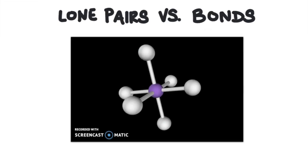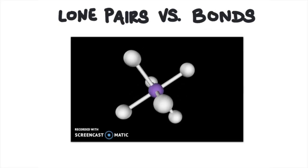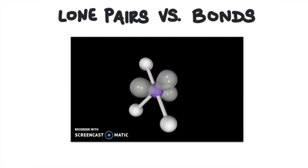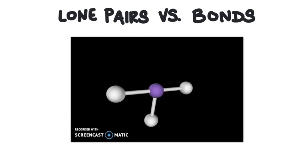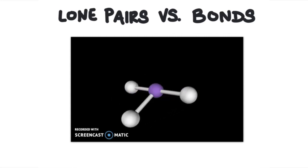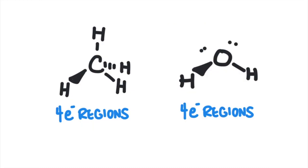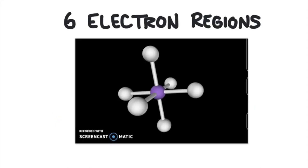Now we can have six electron regions, but they don't all have to be bonds — some of those regions could be lone pairs. Remember that we only see bonds and won't see the lone pair, so the molecule is going to look really different if we replace a bond with a lone pair. Take a look at these two for example: the same number of electron regions, but the molecules look really different. So let's look at the different shape possibilities we have with six electron regions.